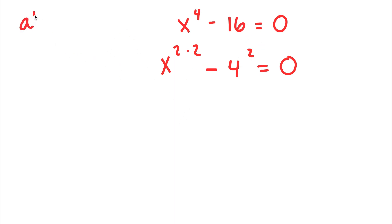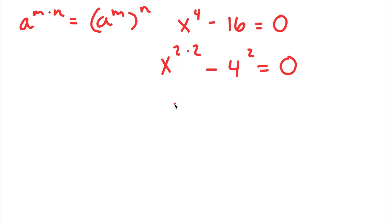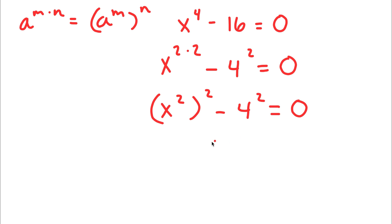Now, if I have something in the form a to the power of m times n, this is the same thing as a to the power of m to the power of n. So x to the power of 2 times 2 can equal x to the power of 2 to the power of 2, and I have this minus 4 to the power of 2 is equal to 0.